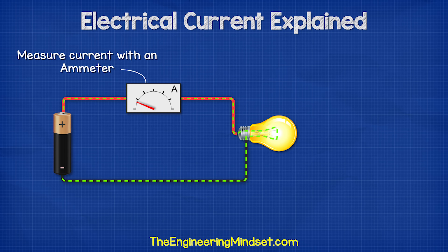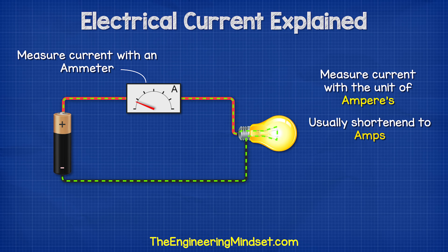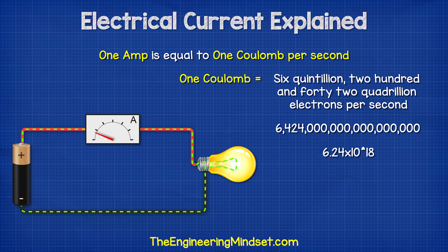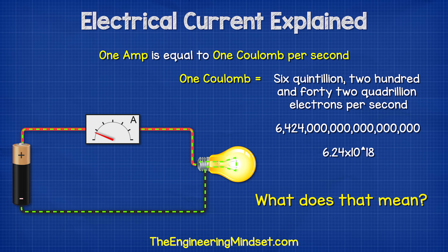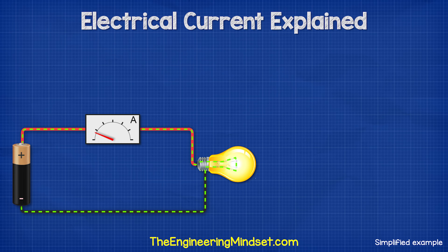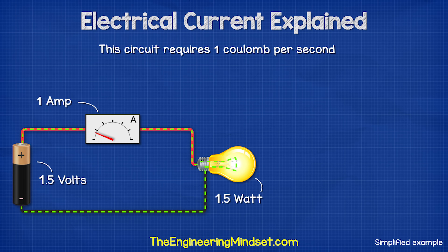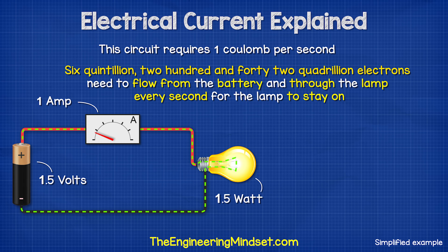We can measure current using an ammeter, and we measure the flow of current in the unit of amperes, but you'll usually hear people just shorten this to amps. One amp is equal to one coulomb per second, and one coulomb is equal to approximately 6,242,000,000,000 electrons per second. Another way to look at this is that to power a 1.5 watt lamp with a 1.5 volt battery requires a current of one amp. That means the circuit requires one coulomb per second, which means approximately 6,242,000,000,000 electrons need to flow from the battery and through the lamp every second for the lamp to stay on. But it's not very practical to say how many electrons per second are flowing, so engineers just say amps to save time.